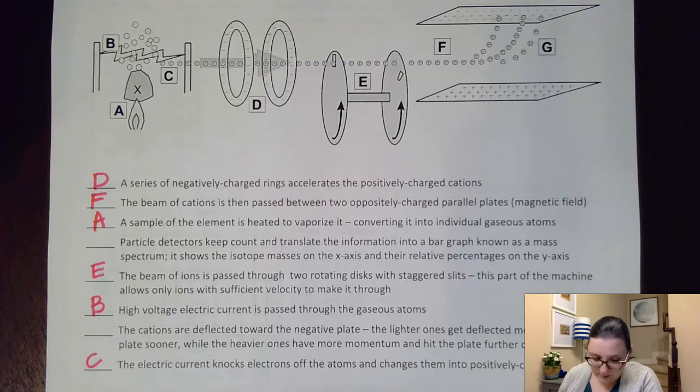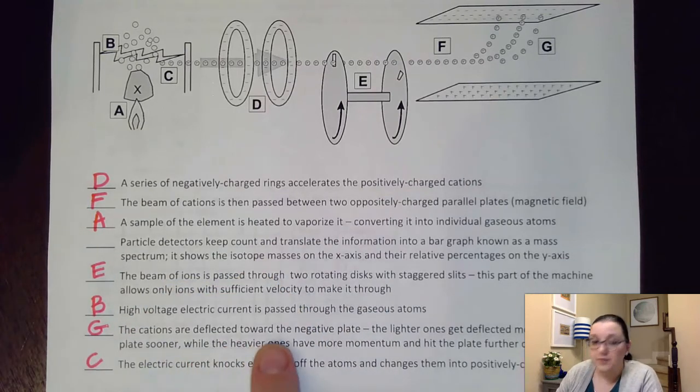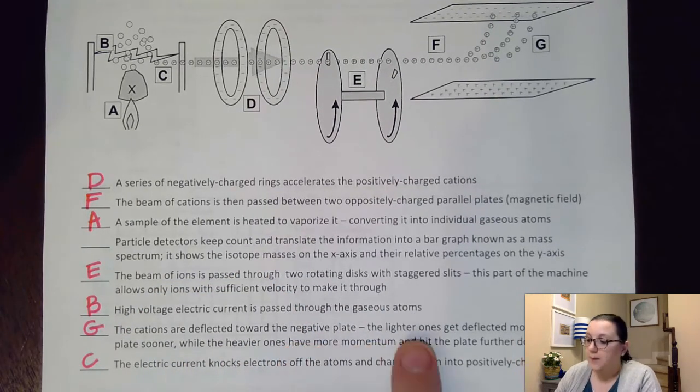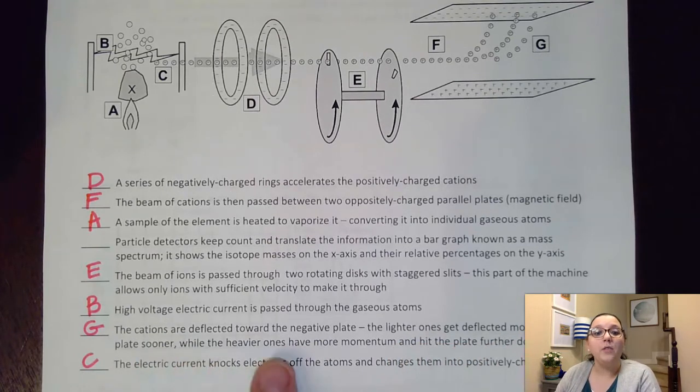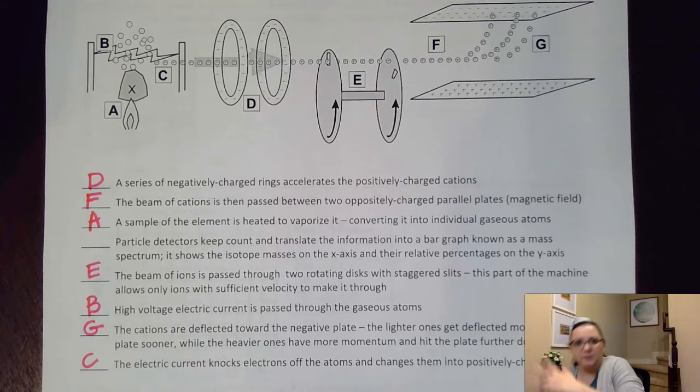So our next step here, G. The cations are deflected toward the negative plate, as we already mentioned, but the lighter ones get deflected more and hit the plate sooner, while the heavier ones have more momentum and hit the plate further down. So those light ones kind of ping up almost automatically, whereas those heavier ones kind of take a while to get their way up.